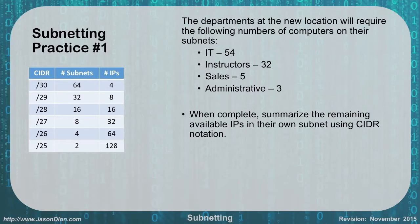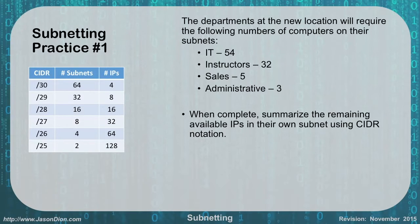The departments at the new location will require the following number of computers on their subnets: IT needs 54, instructors need 32, sales needs five, and administrative needs three. When complete you're going to summarize these subnets using slash or CIDR notation.